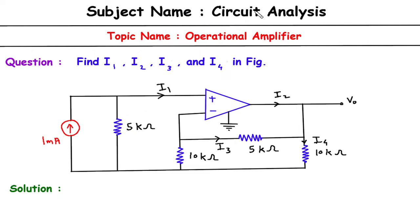Subject name: circuit analysis. Topic name: operational amplifier. Find I1, I2, I3, and I4 in the figure. Here we have to find I1, I2, I3, and I4.